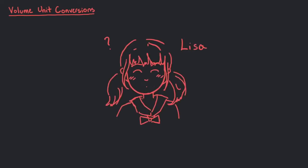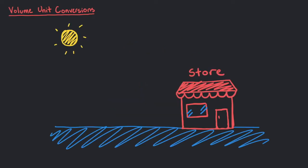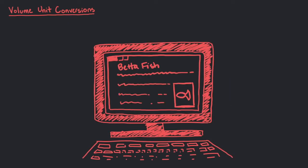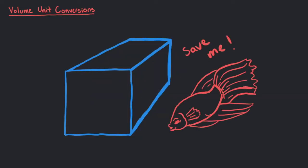Our friend Lisa has a problem she needs help with. Earlier today, she bought a fish tank with a length of 45 centimeters, a width of 30 centimeters, and a height of 30 centimeters. She reads online that betta fish need at least 19 liters of water to survive. Would this tank keep a betta fish alive?